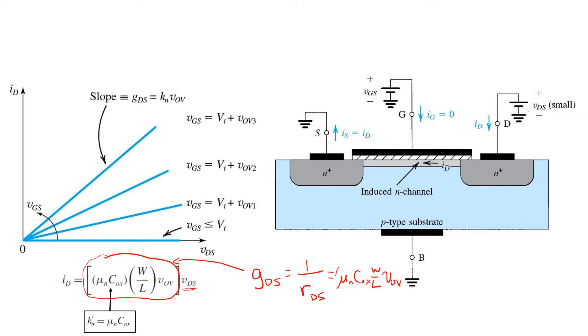Now this term here, mu n C-ox, arises so often in expressions for transistor behavior that we're going to use a shorthand K n prime to denote it.